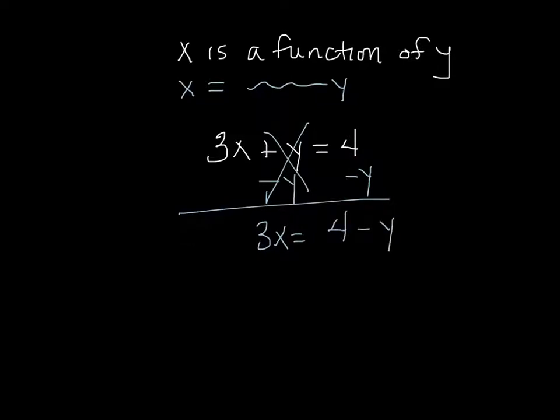But I'm not done this time because I still have that 3 right there. So I need to get rid of that 3. It's being multiplied times x. So to get rid of it, I divide by 3. But then that means on the other side, I also have to divide by 3. The whole thing. Everything gets divided by 3. And so now I get x equals, and we can rewrite it as just 4 minus y over 3.